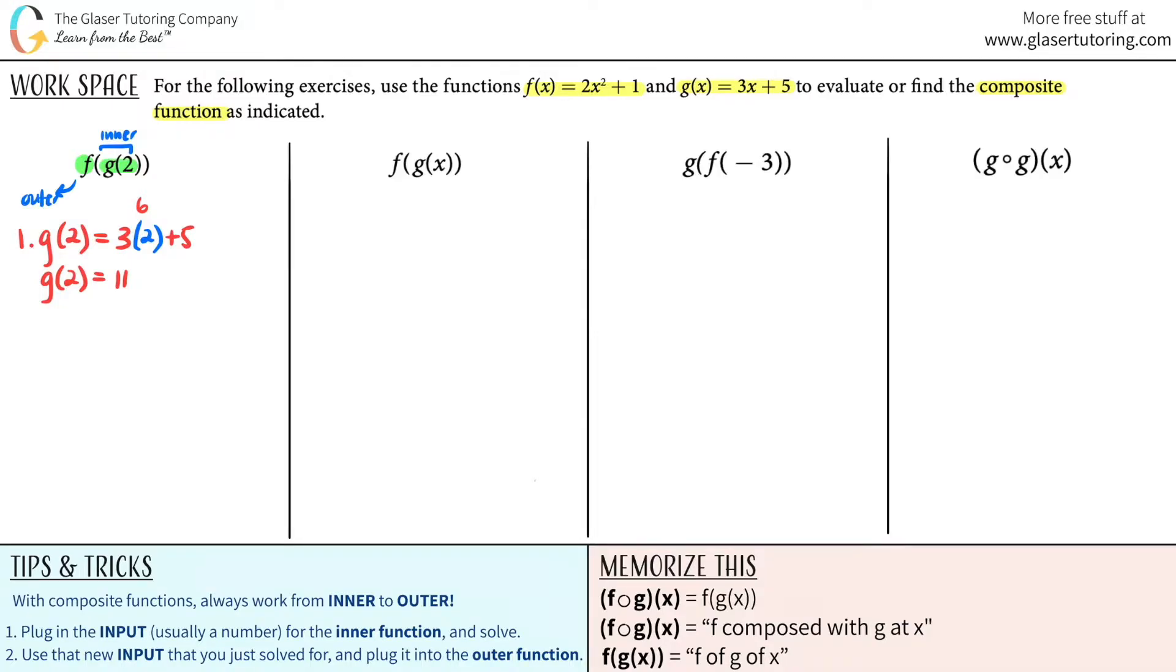And now, we're going to take that answer, and that's going to be your new input. We just solved for that, and we're going to plug it into the outer function. So that's step number 2. The outer function is the f function. But what number do I put in here? I put in 11. It's the answer to what you got. And now, I go to the f function. Wherever I see an x value, I plug in the number that was provided, or that we just found out. So in this case, it would be 2 times 11 squared, and then plus 1.